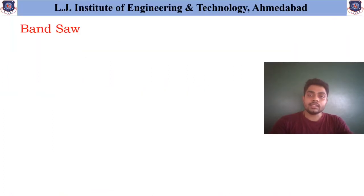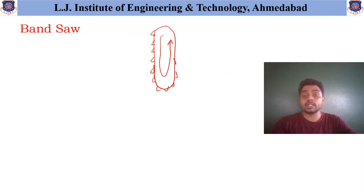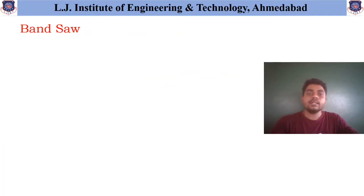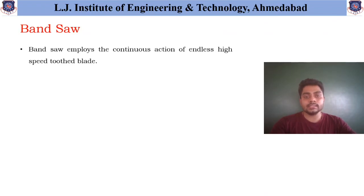Let us start with our first topic, that is the band saw. As we have discussed in our previous lecture, this band saw is a ribbon-like structure in which this type of band is available and over which these cutting teeth are available. As it rotates and comes into contact with the workpiece, it starts removing material, and that is how the cutting action is obtained. This band saw employs a continuous action of an endless high-speed tooth blade, because over its entire periphery all the tools are available. As it is rotating, this operation is called the endless cutting operation.